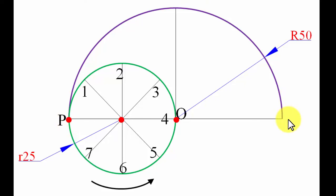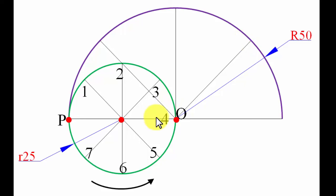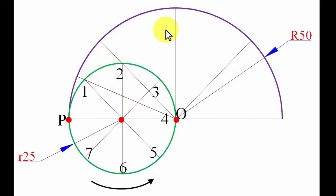This arc spans 180 degrees. Bisecting 180 degrees gives two angles of 90 degrees each — one to the left and one to the right. Then bisect each 90-degree angle to get 45-degree divisions. Next, bisect the 45-degree angles further to get eight equal angular divisions across the entire 180-degree arc.